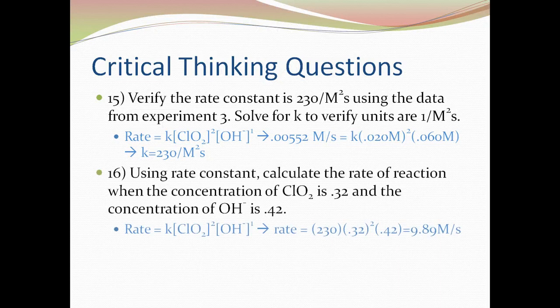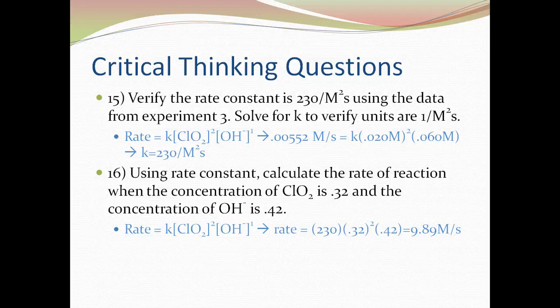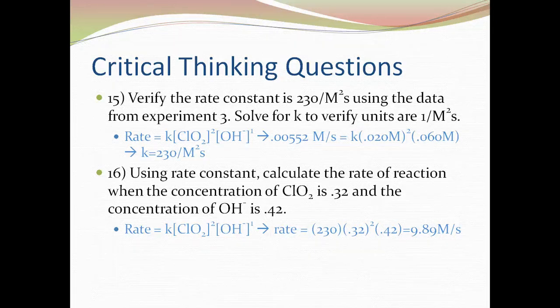Number 16, using the rate constant, calculate the rate of reaction when the concentration of ClO2 is 0.32 and OH- is 0.42. We plug it in the same rate law as number 15. Calculate it all out, and you get the value to be 9.89 molarities per second.